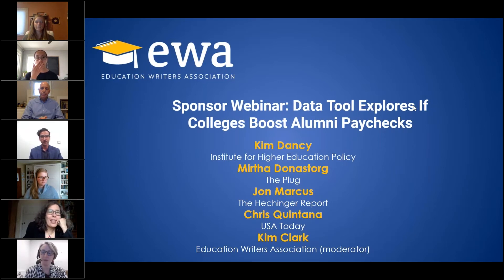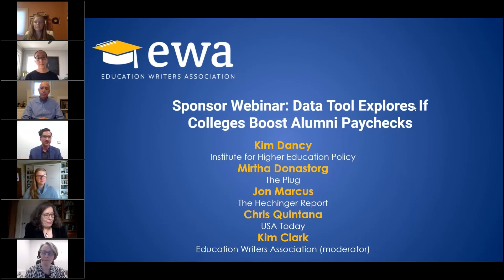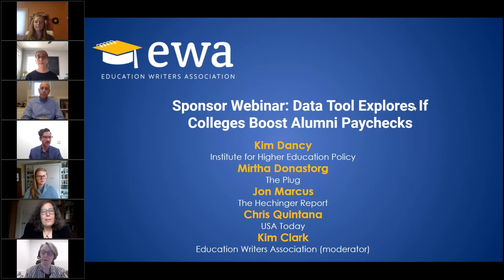In a way, it can be a solutions journalism tool — it helps you identify schools that might be doing a good job. When you're covering a lot of universities across a wide area, it can be hard to keep track of all of them, and this way you can just see who they're serving. If you're seeing an institution that's doing really well on earnings but it's only taking 20% of Pell students or has an exceptionally high admissions rate, that should prompt more questions for you as a reporter.